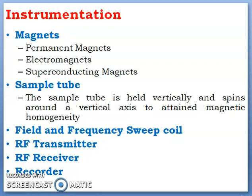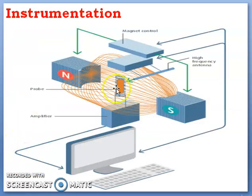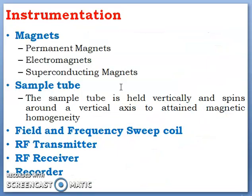In the image, you can see here it is a sample tube where we have to insert our sample in the sample holder. The sample tube is held vertically and spins around the vertical axis to attain magnetic homogeneity.